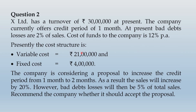Since variable cost varies in proportion to sales, if sales increase by 20 percent, variable cost will also increase by 20 percent. 20 percent of 21 lakhs is 4 lakh 20,000, so revised variable cost is 25 lakh 20,000. Alternatively, variable cost is 70 percent of sales (21/30), so 70 percent of 36 lakhs equals 25 lakh 20,000. Fixed cost of 4 lakhs remains constant in both present and proposed columns.